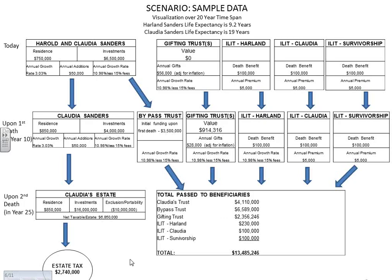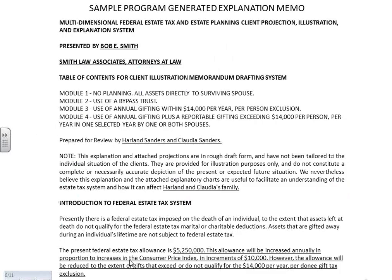The explanation letter or memo is going to come out with your name and company name on it. It's going to have the client's names and show them: Module 1 — no planning, relying only on portability; Module 2 — using a bypass trust; Module 3 — annual gifting with no discounts; Module 4 — annual gifting with discounts. We're also going to be adding Module 5 with one life insurance trust, Module 6, Module 7, and eventually modules for installment sales and grantor trusts. We'll be glad to send the letter to you as a Word document so you can start customizing it.